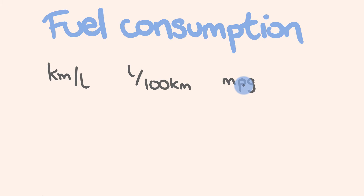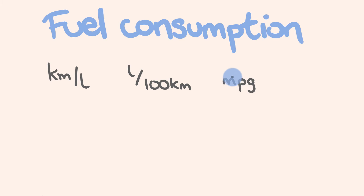You're going to notice that for each of these we actually have a formula written out. We have kilometres divided by the number of litres, and litres divided by the number of 100 kilometres. And miles per gallon, which means miles divided by the number of gallons. We're going to be using these to work out a lot of things to do with fuel consumption.